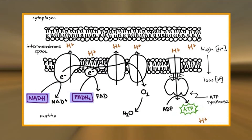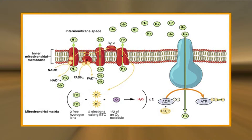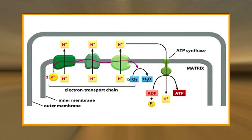The high energy electrons from NADH and FADH2 are transferred through a series of carriers in the membrane to molecular oxygen. The energy derived from these electron transfer reactions is converted to potential energy stored in a proton gradient across the membrane, which is then used to drive ATP synthesis. The inner mitochondrial membrane thus represents the principal site of ATP generation, and this critical role is reflected in its structure. Its surface area is substantially increased by its folding into cristae.